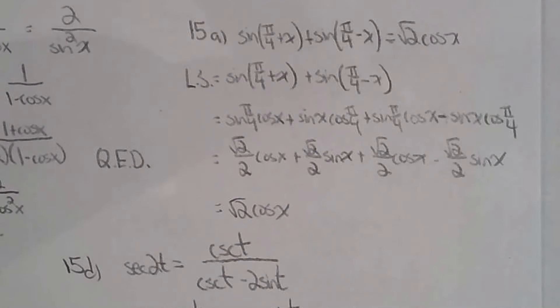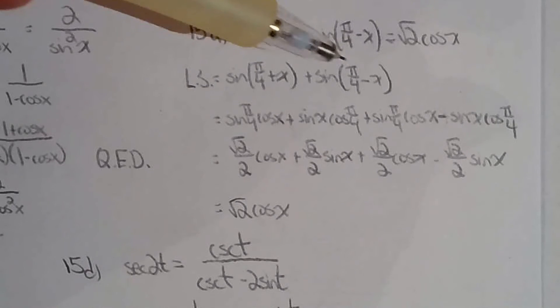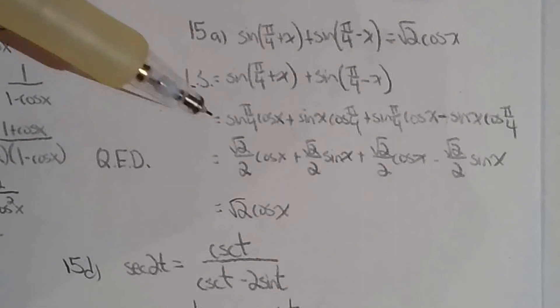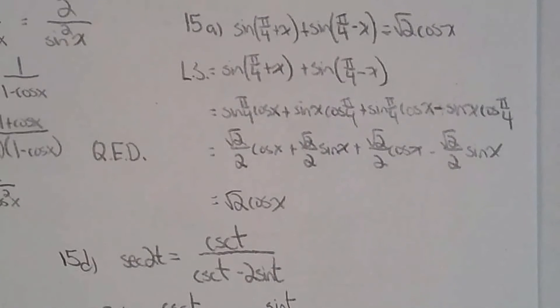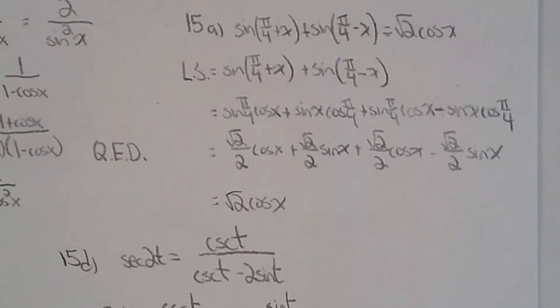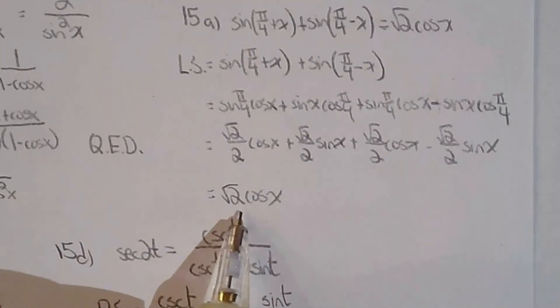Question 15a is very similar to question four: addition formula for sine, subtraction formula for sine, some special angles, simplify — and you get 2 cosine x, which equals the right side. QED.